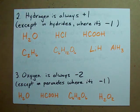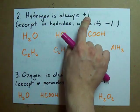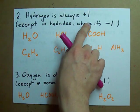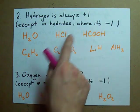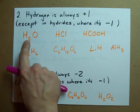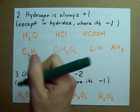Step two: hydrogen's always plus one, except in something called hydrides. In hydrides, they're minus one. Here's what I mean.